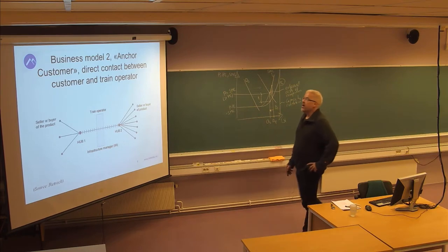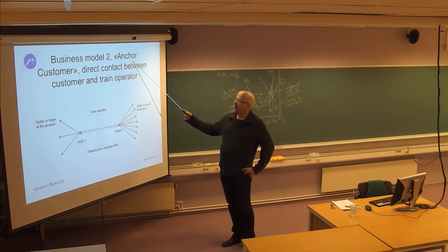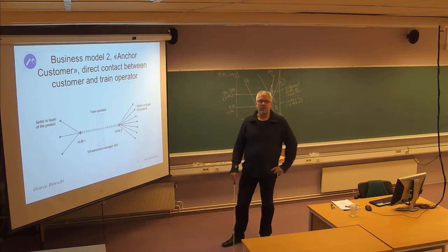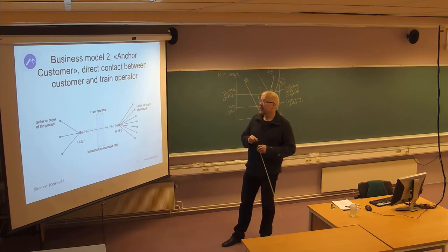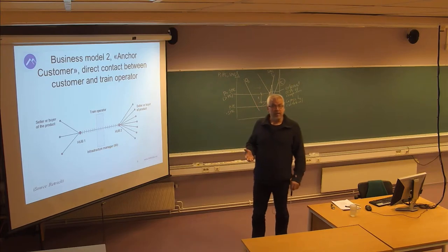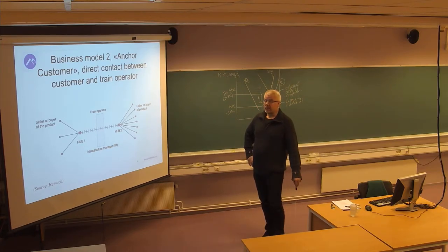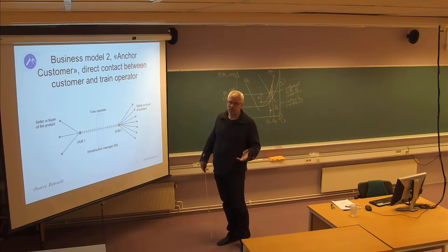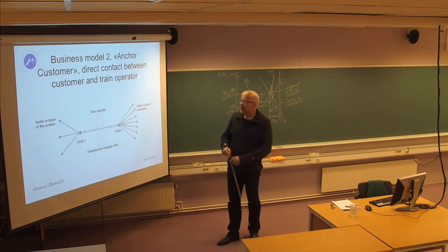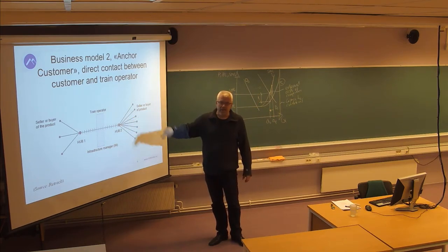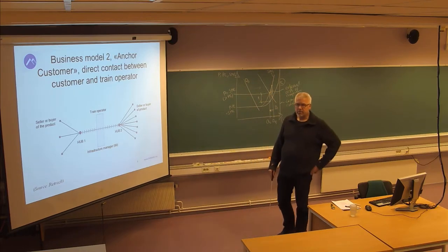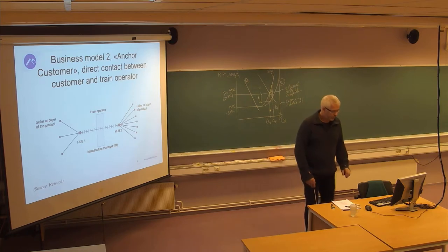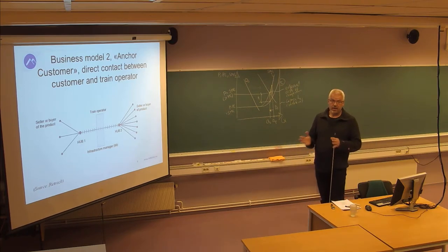A second business model is where you have what we call anchor customers, with direct contact between customer and train operator. That is perhaps convenient where you have big customers that can actually deal with the train operator directly, because they have such large volumes that they are able to fill a whole train with their cargo. So then you can, in some cases, skip the intermediary company — the 3PL, third-party logistics provider, the consolidator — and go directly with the operators. That is another business model, and these can be mixed, depending on the nature of the shipments and the size of the customers.